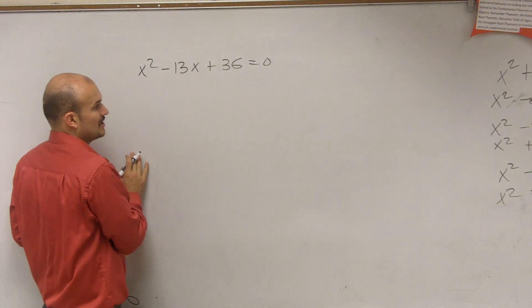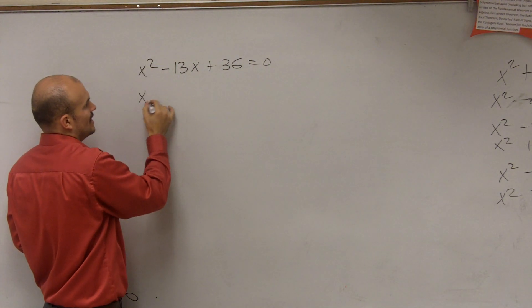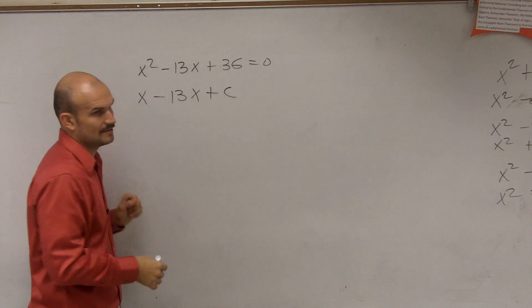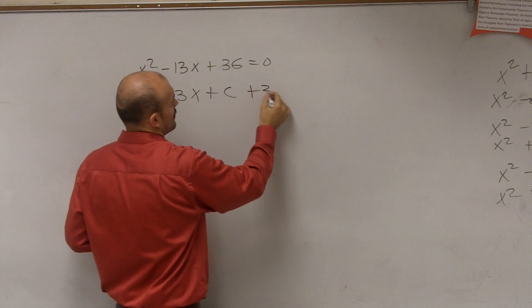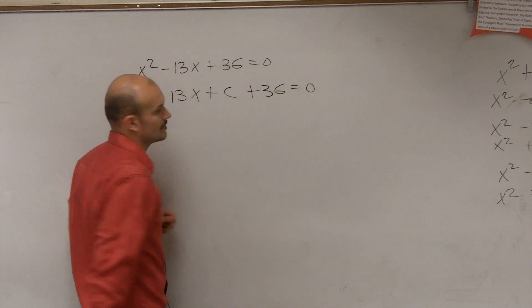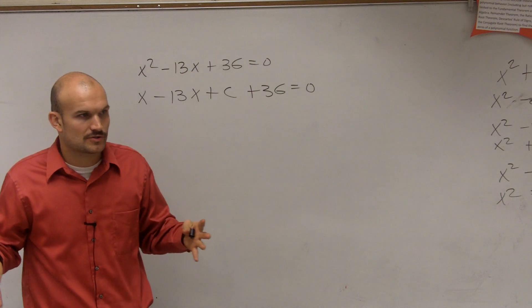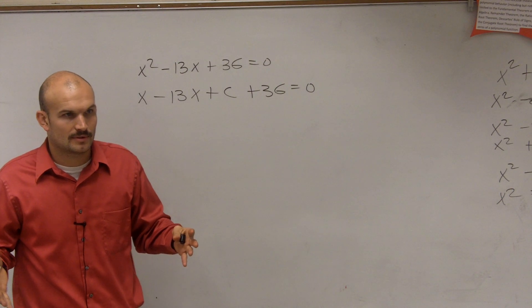What we're going to do is I'm going to kind of forget this value right now. And I'm just going to say x squared minus 13x plus c, plus 36 equals 0. So what I want to do is I want to create a perfect square trinomial.